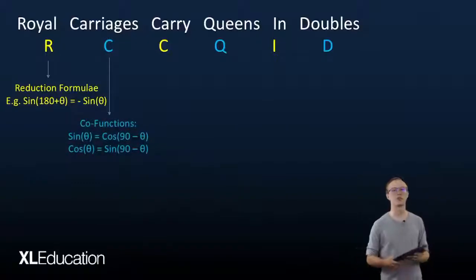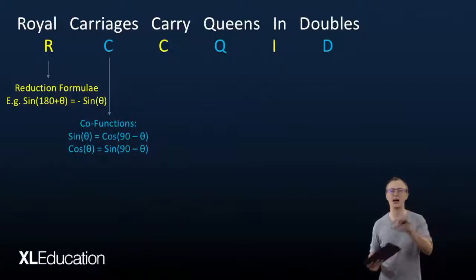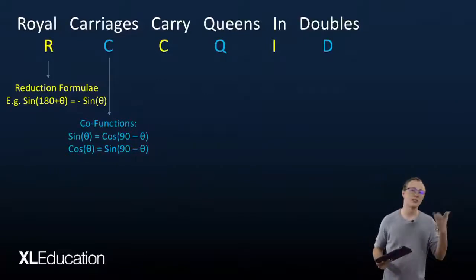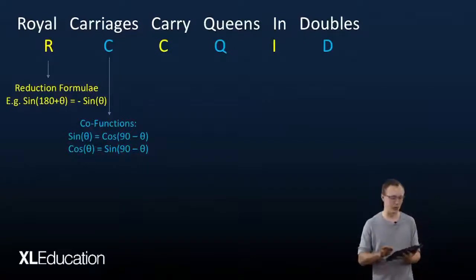The second tool that's available to you is to use your co-functions. So if you have something like 90 minus theta, you can turn sine into cos or cos into sine, and perhaps that'll be helpful to you.